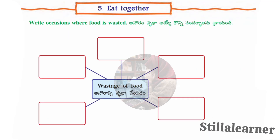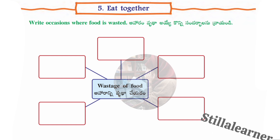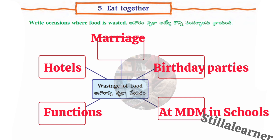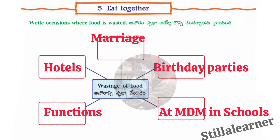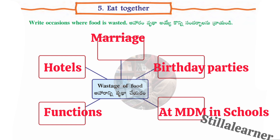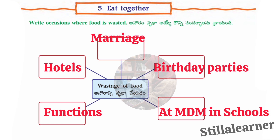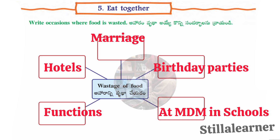The second section asks: write occasions where food is wasted. The answers are: marriages, birthday parties, at midday meals in school, functions, and hotels.